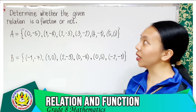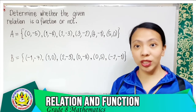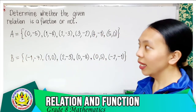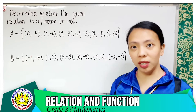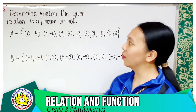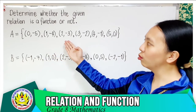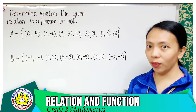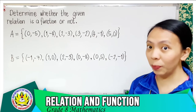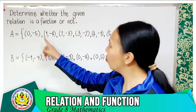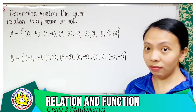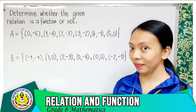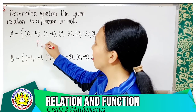It's time for us to determine whether the given sets of relations are functions or not. Set A is given as a set of ordered pairs: (0,5), (1,4), (2,3), (3,2), (4,1), and (5,0). Is there a first element that is repeated? 0, 1, 2, 3, 4, 5 — no, there isn't. Therefore, this is a function.